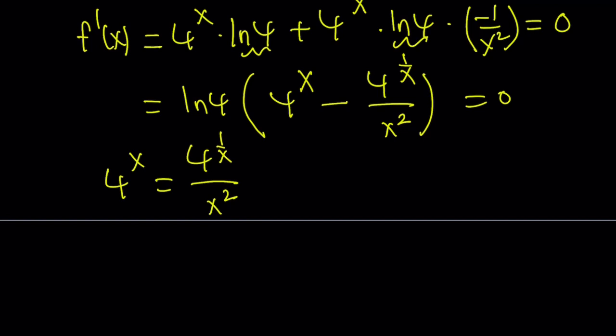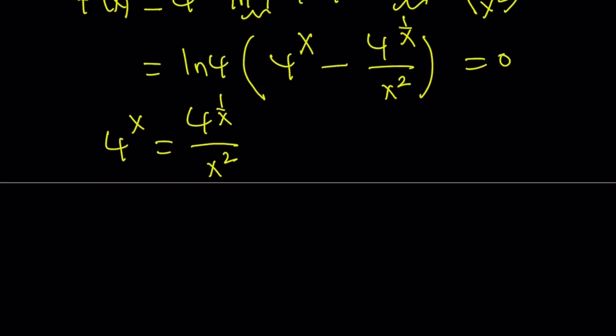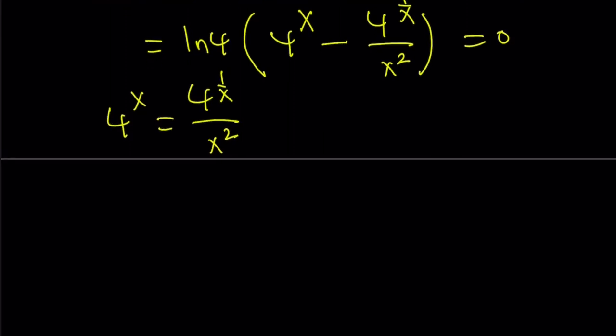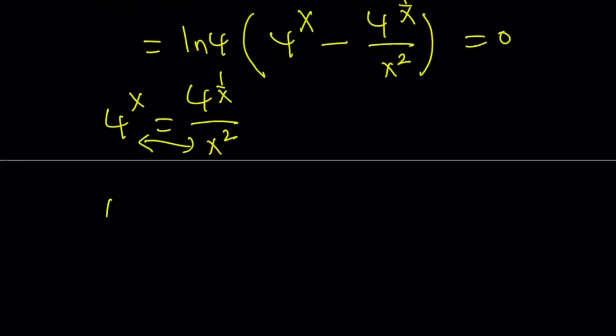So, let's go ahead and cross multiply maybe. Actually, I would like to bring the 4s together. So how can I do that? How about switching these two? Since they're multiplied, they can be switched, right? x² can be written as 4^(1/x)/4^x.